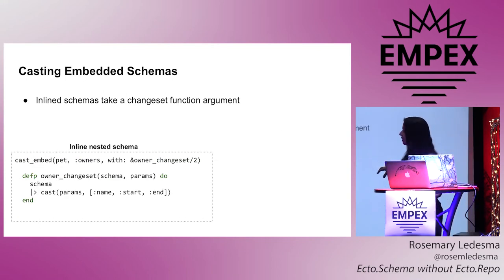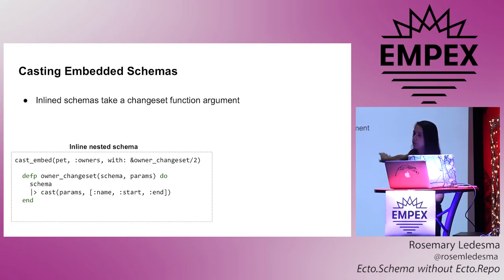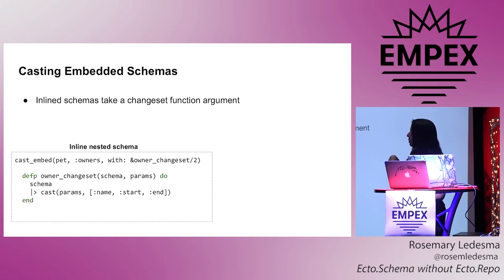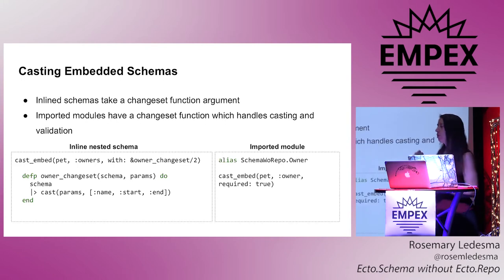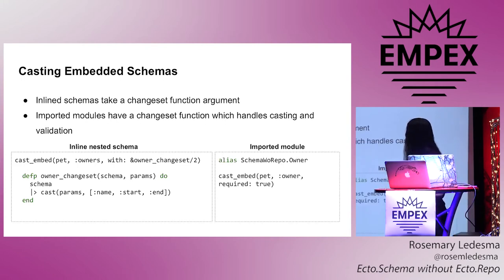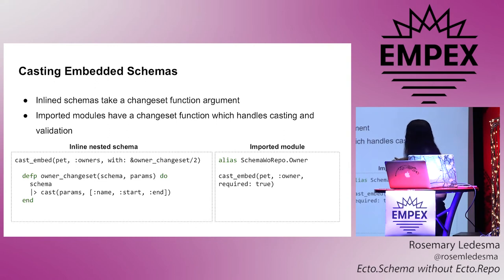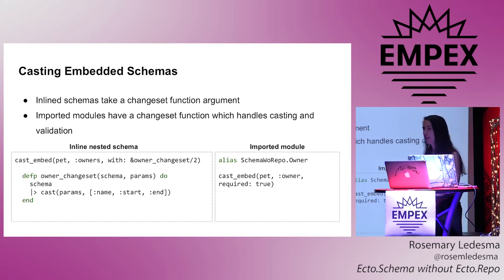If you do the inline style, this is how you would cast into it — you provide as an argument the function that's going to process that changeset, taking in the params and doing whatever casting you need. If you do the other strategy where you're importing a module, that module needs to have a changeset function and that will get called for you. But you do have to do this special type of casting called cast_embed, and then you can say things like whether it's required.